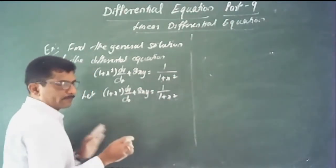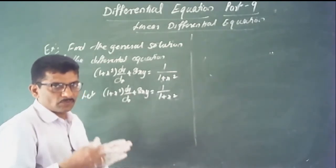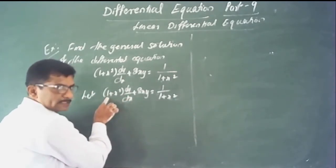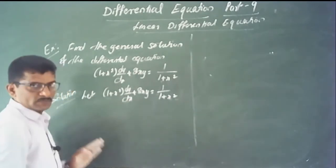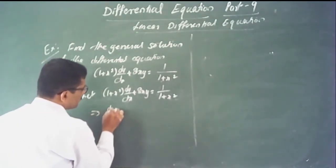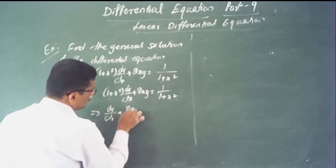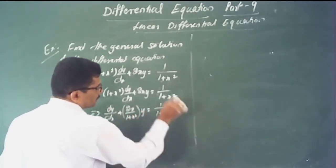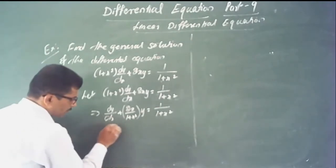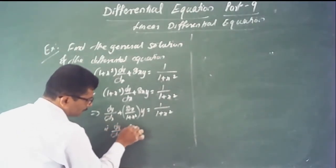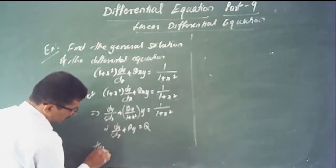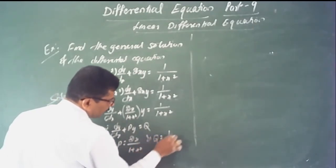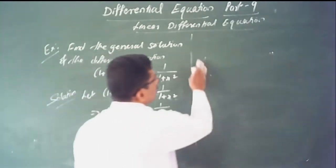First, rewrite in the form dy/dx plus p times y equals q. Dividing each term by (1 plus x squared) to make the coefficient of dy/dx unity, we get dy/dx plus 2x/(1 plus x squared) times y equals 1/(1 plus x squared) squared. This is in the standard form. Here p equals 2x/(1 plus x squared) and q equals 1/(1 plus x squared).